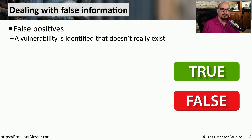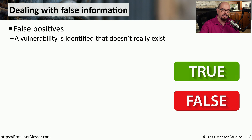One of the challenges when looking through log files or receiving reports of vulnerability scans is that you'll often have to sift through information that is simply not correct. We refer to this false information as a false positive. We've been given information that a particular vulnerability exists in an operating system, but after looking into it, you see that the vulnerability really does not exist in that OS. In that scenario, you've been given a positive, but that positive is false.